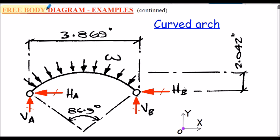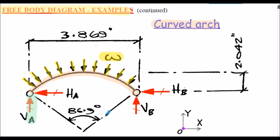Here we have a curved arch with a uniformly distributed load applied to it — these arrows simulating the UDL. The reactive system on the free-body diagram shows vertical reactions at each end and horizontal forces. It's fairly obvious that the actual value of the HA force is in the opposite sense, but when undertaking analysis with multiple load cases we often show reactive forces in one particular direction; if the calculated value is negative it simply means the force acts in the opposite direction.